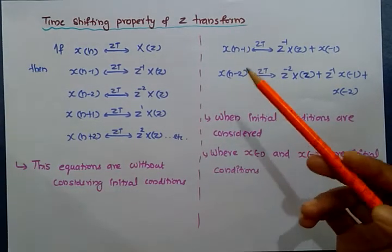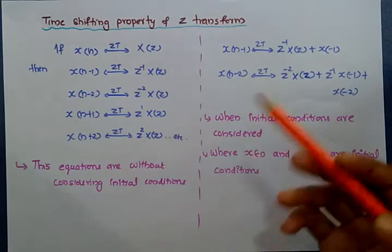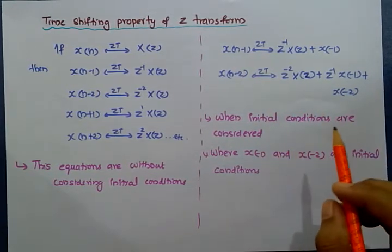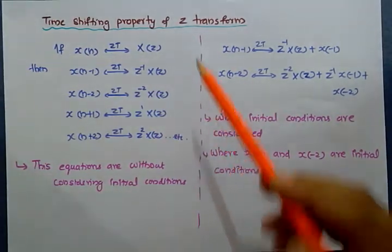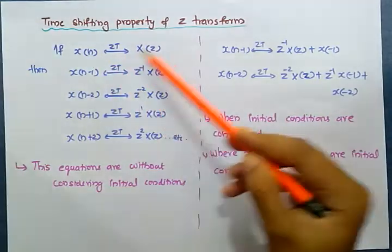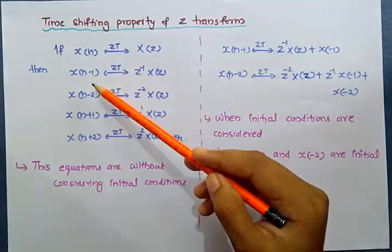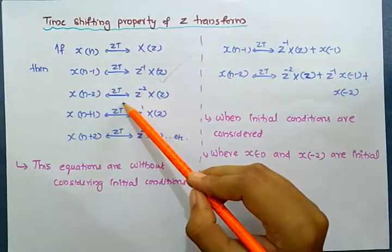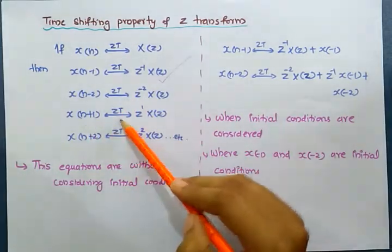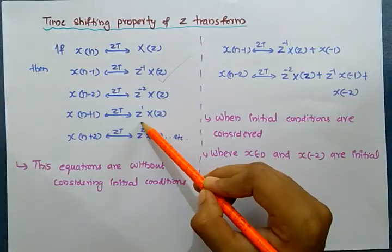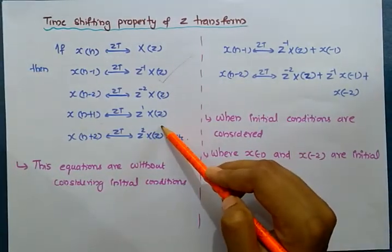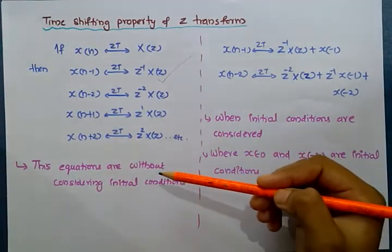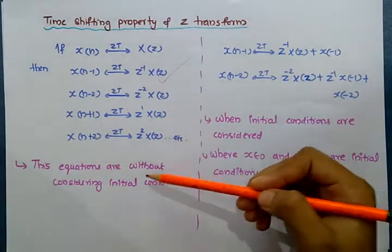The next topic is the time-shifting property of Z-transform. For solving numerical problems, we need to know this property. We know that the Z-transform of x(n) is X(z), and the Z-transform of x(n minus 1) is z-inverse times X(z), which is the time-shifting property. Similarly, the Z-transform of x(n minus 2) is z-inverse squared times X(z), and so on. These equations are without considering the initial conditions.